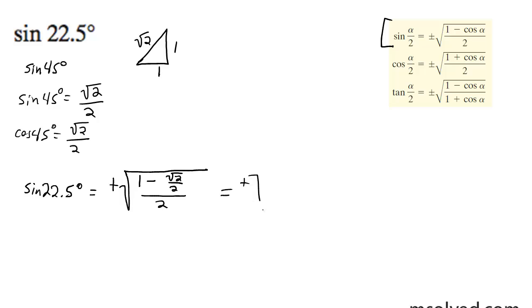I'm going to get a common denominator on the bottom. It's going to be 2 minus root 2 over 2, over 2, and then simply it's going to become 2 minus root 2 over 4.